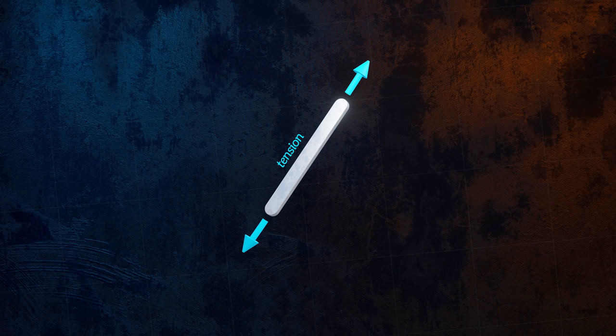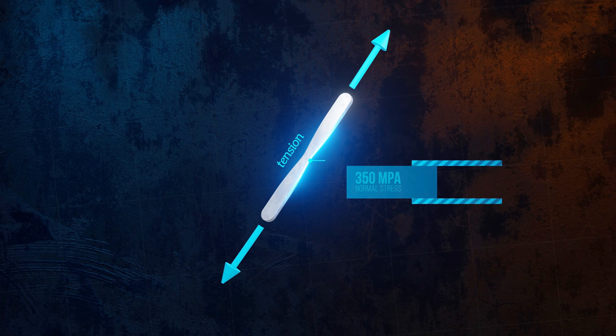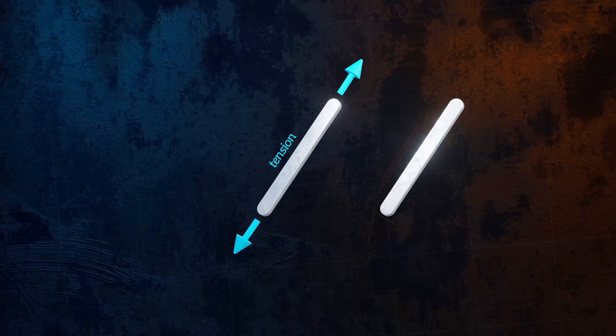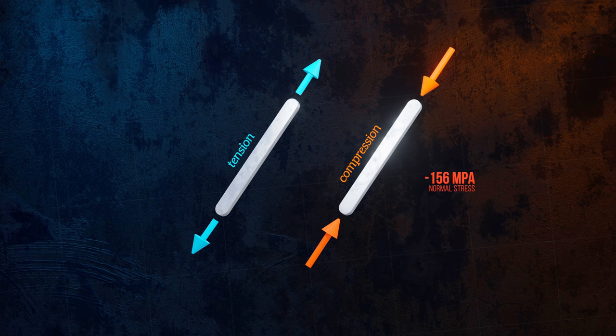When a bar is loaded in uniaxial tension, it will fail when the normal stress in the bar exceeds the yield or tensile strength of the material. And if it's loaded in compression, it will fail by crushing when the compressive strength of the material is exceeded.